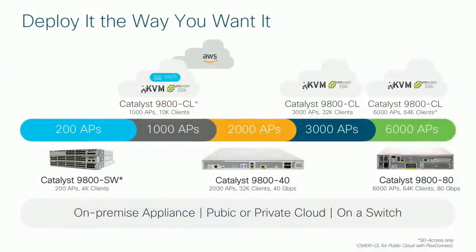Deployment options scale from the embedded switch at 200 APs and 4,000 clients, to the 9840 appliance at 2,000 APs, to private cloud at 3,000 APs. For the largest deployments of up to 6,000 APs and 64,000 clients, you can use private cloud on KVM and ESXi, or the 9880, our next-generation larger platform.